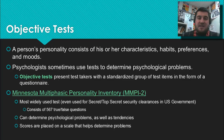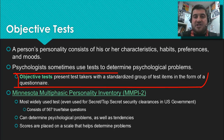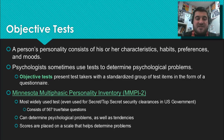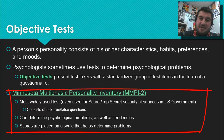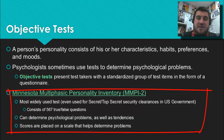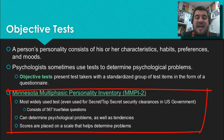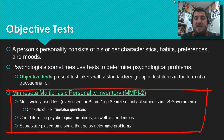Objective tests present test takers with a standardized group of items in the form of a questionnaire. Psychologists use these to determine psychological problems. The MMPI, or Minnesota Multiphasic Personality Inventory, is the most widely used personality test — even used by the U.S. government for security clearances. It has 567 true-false questions, takes 60 to 90 minutes, and can determine psychological problems and tendencies. Scores are placed on a scale with 10 subscales.